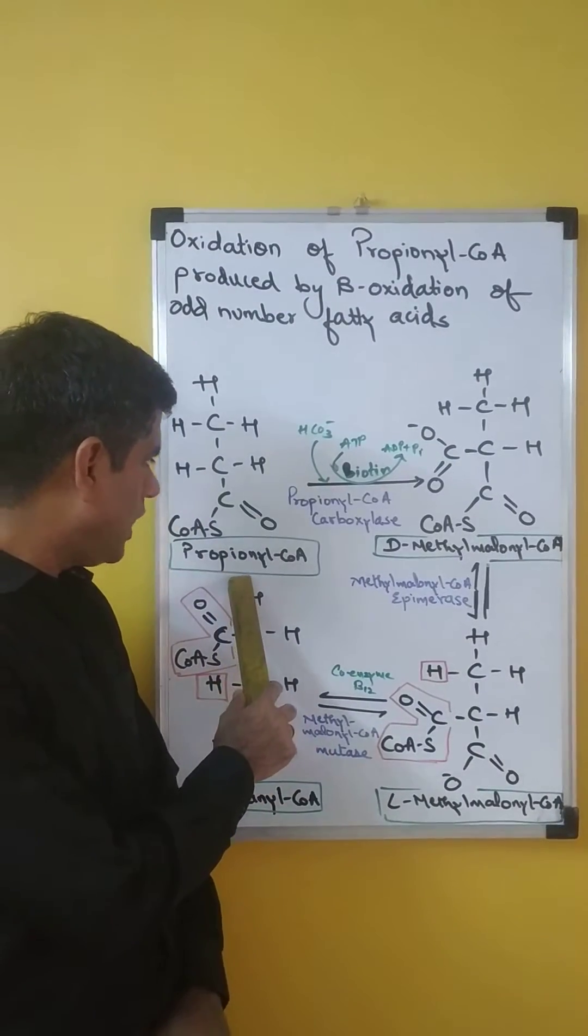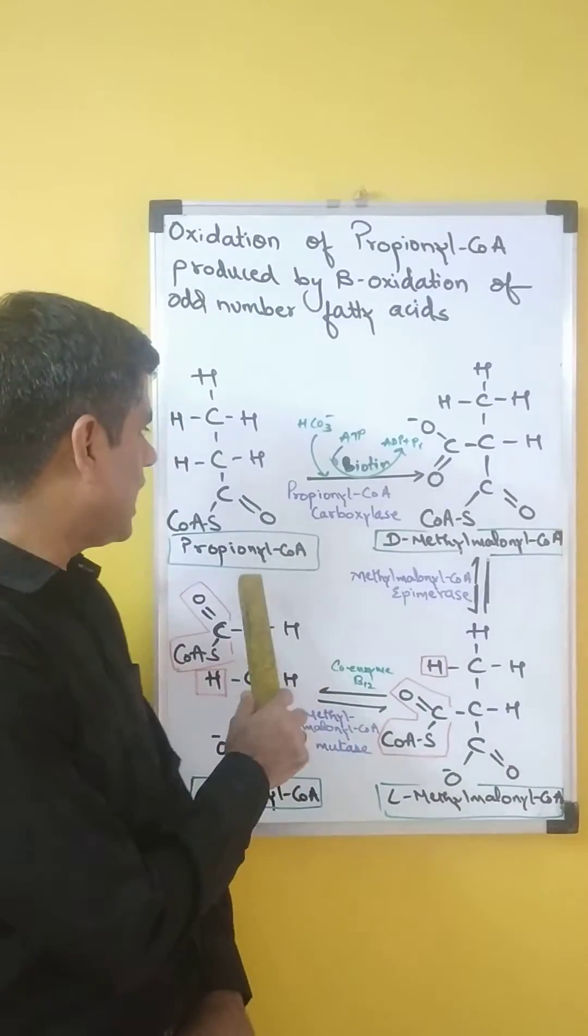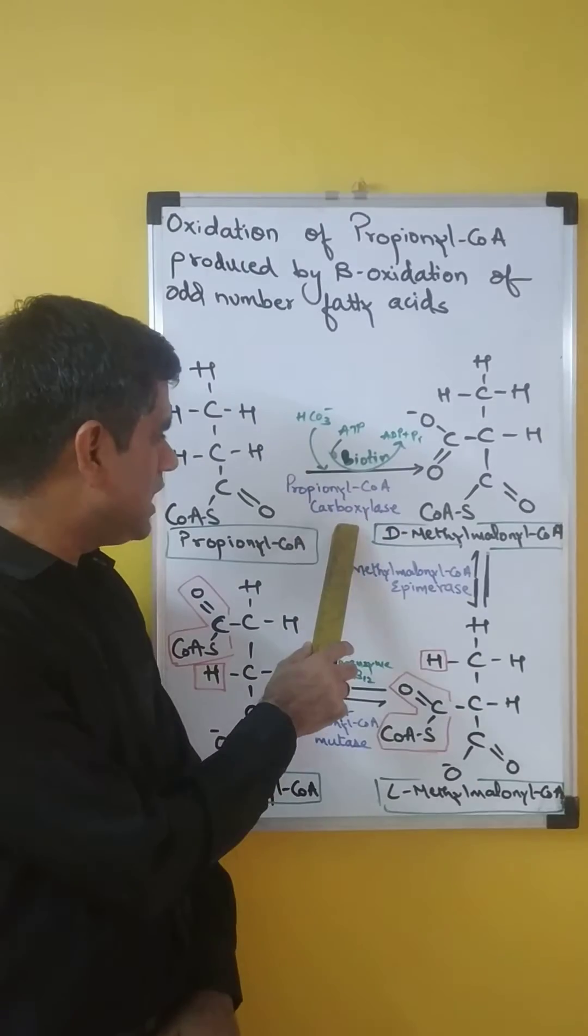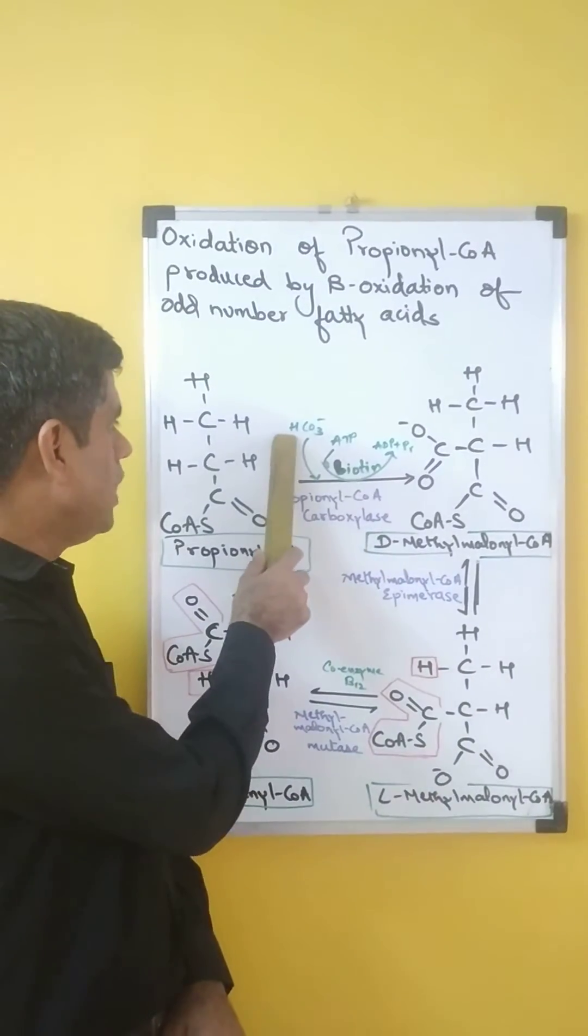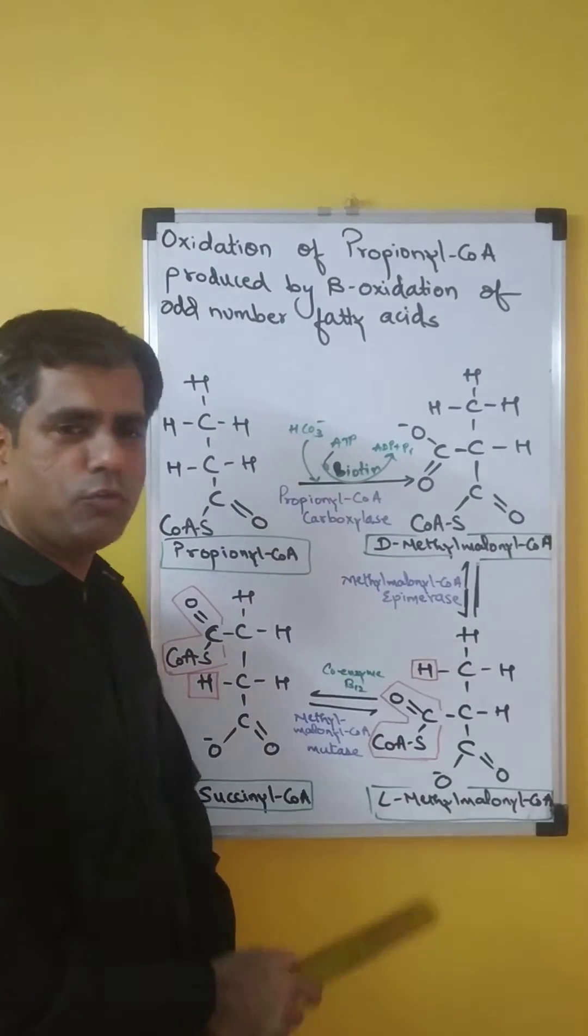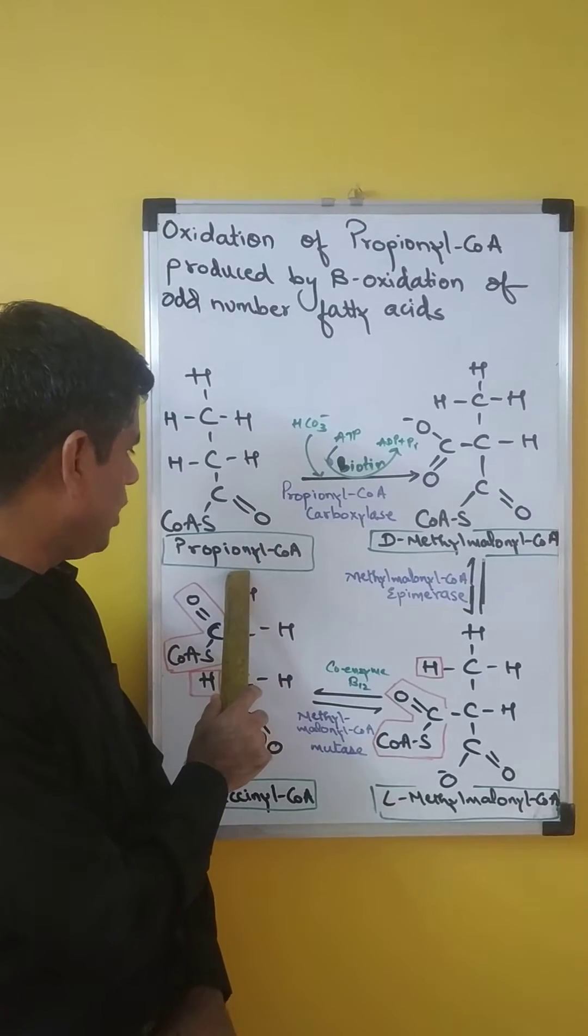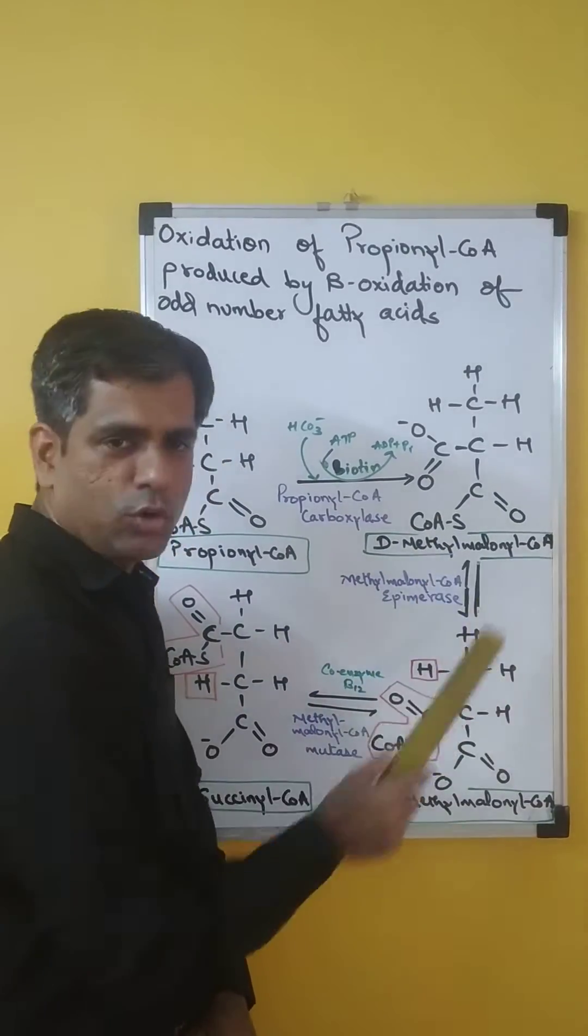In the first step, propionyl-CoA is carboxylated. The first step is carboxylation, catalyzed by propionyl-CoA carboxylase. Propionyl-CoA carboxylase is an enzyme which has biotin as the cofactor. CO2 first combines with biotin to form carboxybiotin, and this carboxybiotin donates the CO2 to propionyl-CoA to form D-methylmalonyl-CoA.